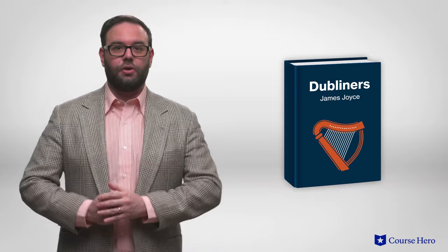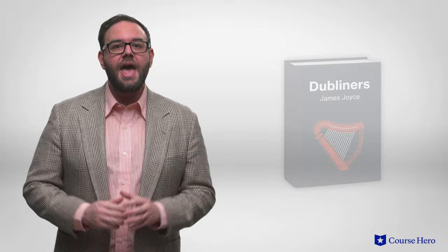Dubliners, a 1914 collection of short stories by James Joyce, is organized in a way that mirrors the progression through life's stages. Joyce's construction of Irish identity in his early work, such as Dubliners, stems from his exploration of identity in a universal sense.